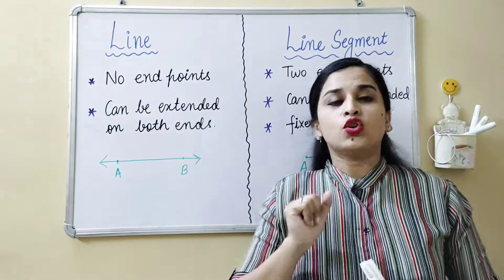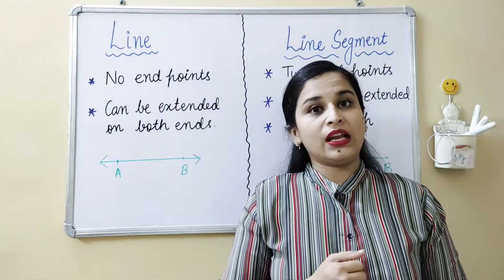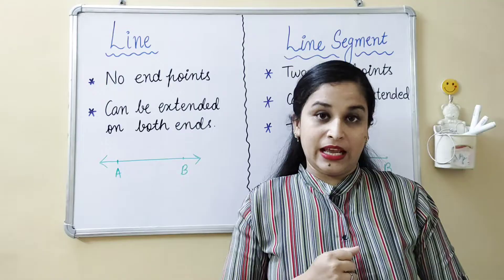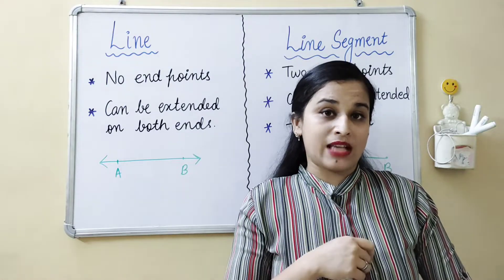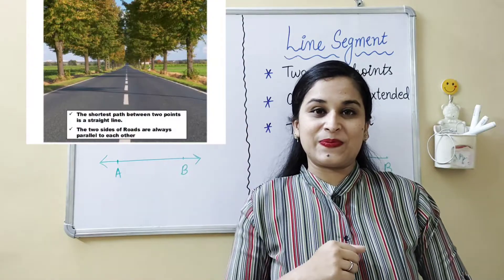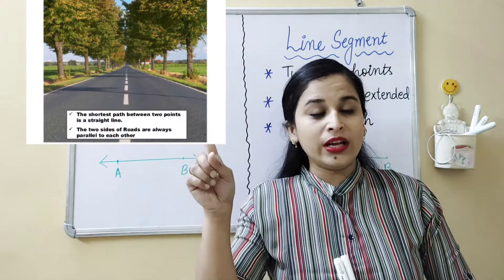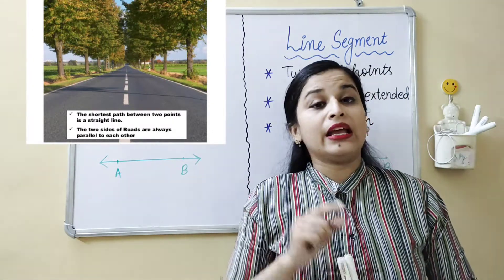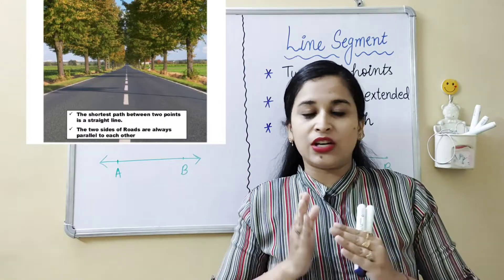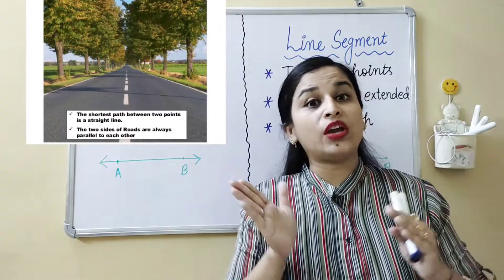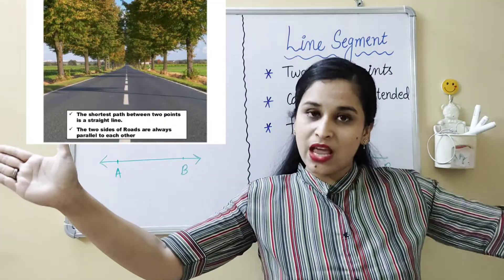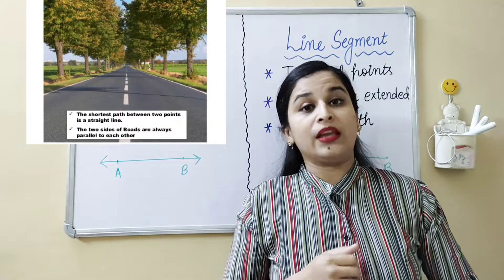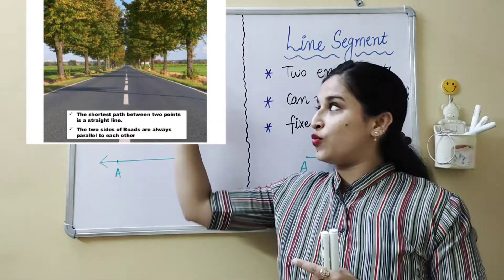Line. So my dear kids, what is a line? A line is something which can be extended from both ends. The road is the real life example of a line. You can see the highway can be extended from both ends — we can go from here as well as from there. So the highway is the real life example of a line.